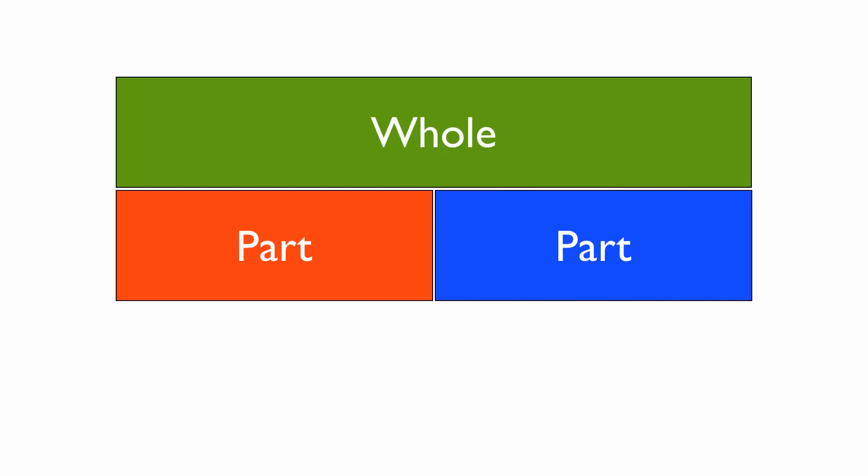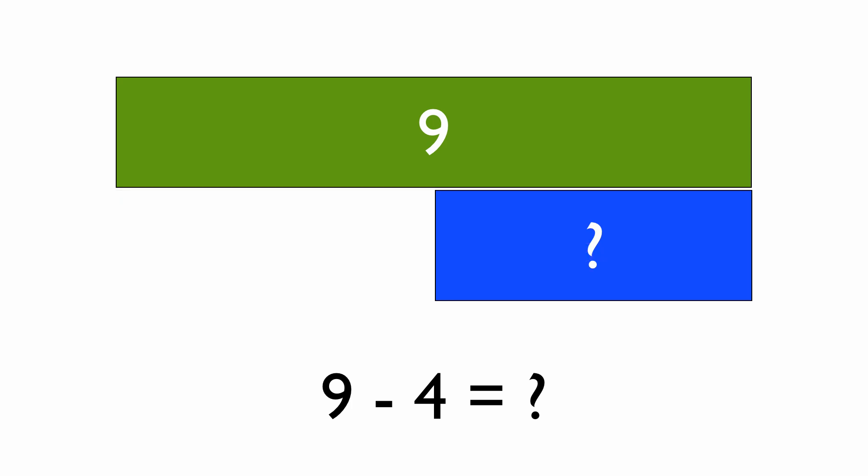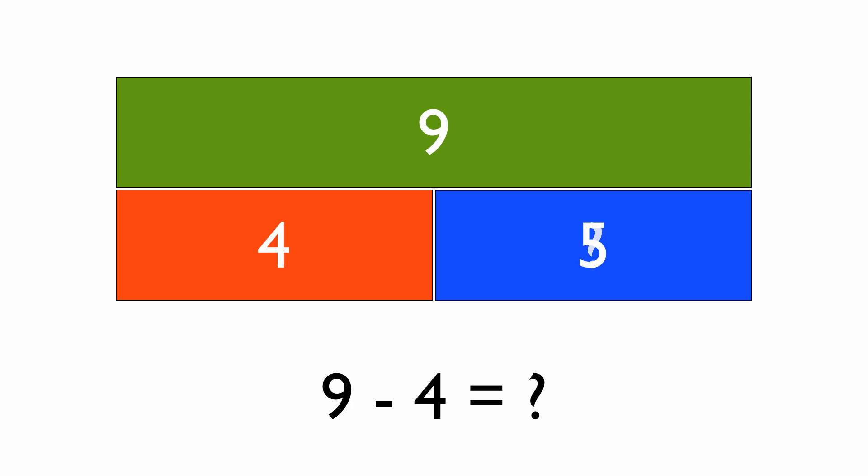Let's have a look at some subtraction problems. The interesting thing about subtraction problems is that the first number in the number sentence will always be your whole, because we always take away the parts from the whole. So 9 take away 4 equals something. 9 must be the whole because it comes first. Then we take away one of the parts, 4, and that leaves us with the other part that we're looking for. Take away that 4 and we can work out that the answer is going to be 5. Fairly straightforward.